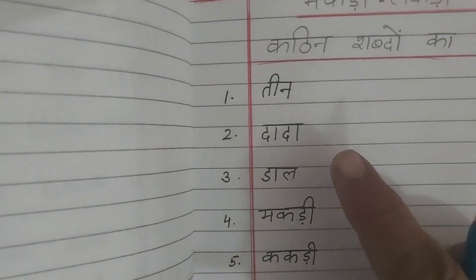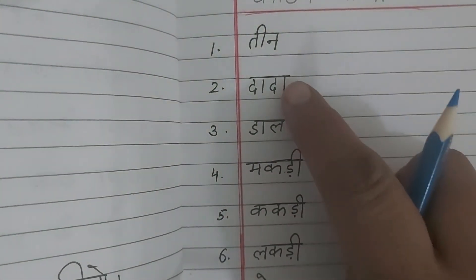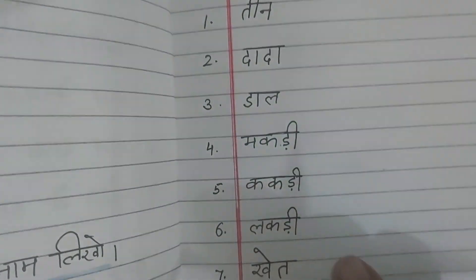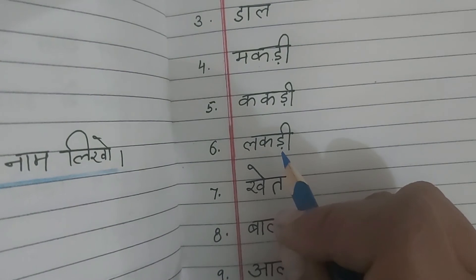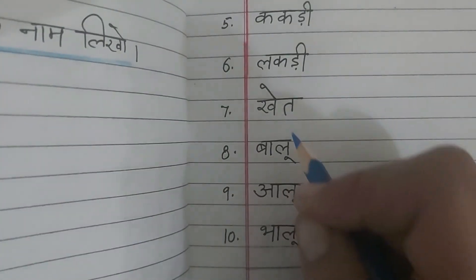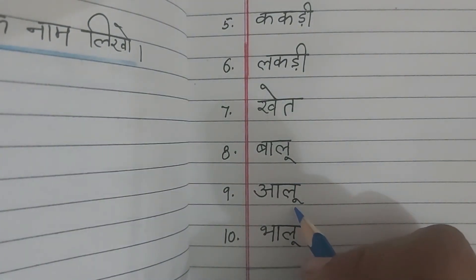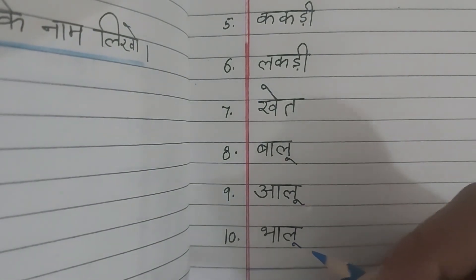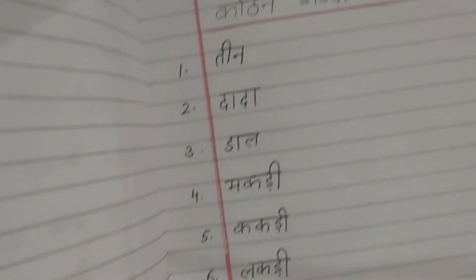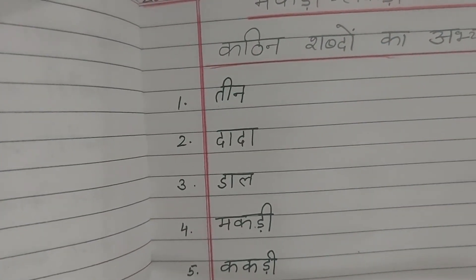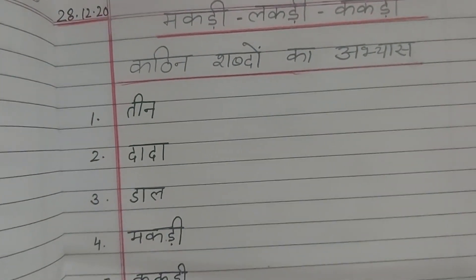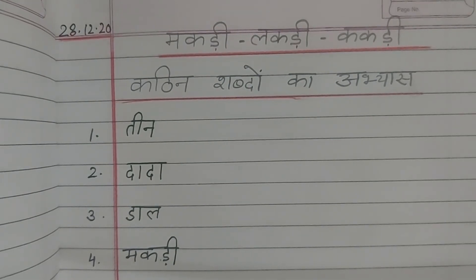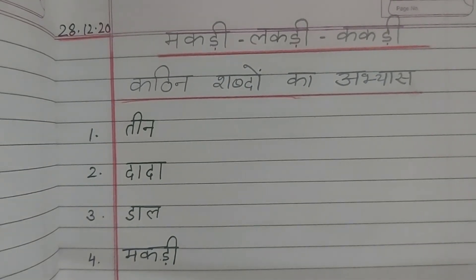मैं एक बार फिर से read कर रही हूं — तीन, दादा, डाल, मकडी, ककडी, लकडी, खेत, बालू, आलू, भालू। ठीक है, आप लिखेंगे और बार-बार लिखकर practice करेंगे कि कौन सी मात्रा किस शब्द में लगाई जाती है। Will meet in next Hindi class with more copy work and अभ्यास पुस्तिका work। Okay, bye bye।